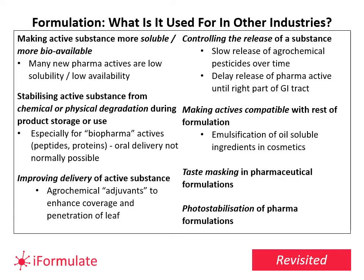What do people do in other industries? They try to make things more soluble and more bioavailable — obviously relevant to probiotics. They want to stabilize the active substance against chemical or physical degradation, which is very important. They want to improve delivery and control release — in agrochemicals and many other industries. A probiotic person might not have thought, 'What have I got to do with pesticides?' — but farmers need delivery to the right part of the GI tract, and that's important for probiotics too. Taste is important in food-based probiotics, and there are also issues with photostabilization. Many challenges in other industries are more relevant to probiotics than you might think.